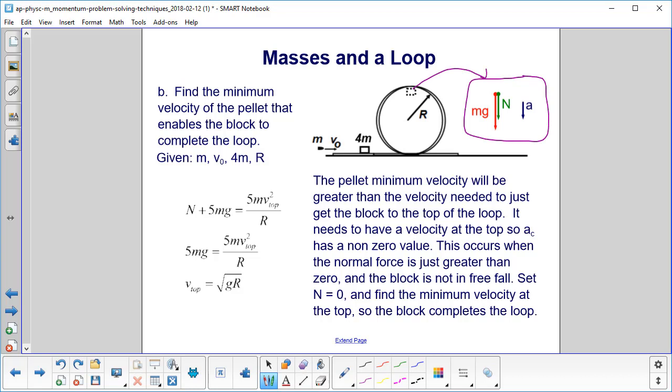We have mg down and the normal is down. Now our pellet minimum velocity will be greater than the velocity needed to just get the block to the top of the loop. We want it to continue around the loop. That means we need a velocity at the top of the loop. It can't be 0 like the last problem.